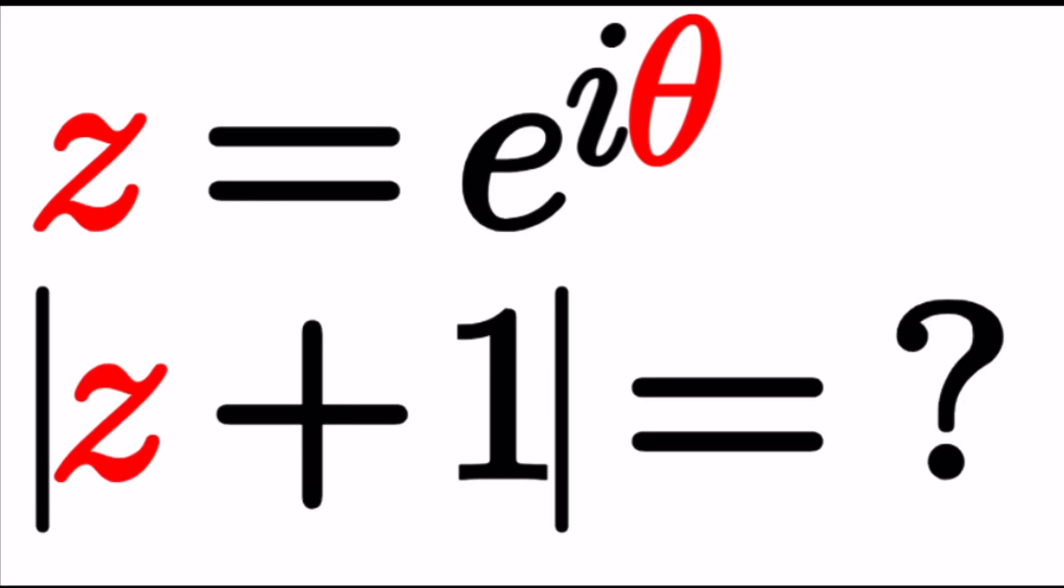Hello everyone. Welcome to A plus PI. This channel is all about complex numbers and in this video we're going to be solving a somewhat homemade equation. We have z equals e to the power i theta and we're supposed to find the absolute value of z plus one.